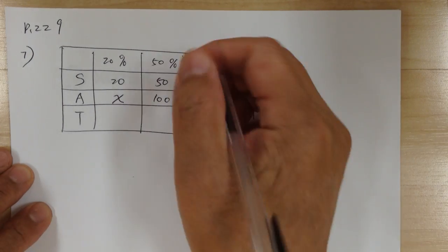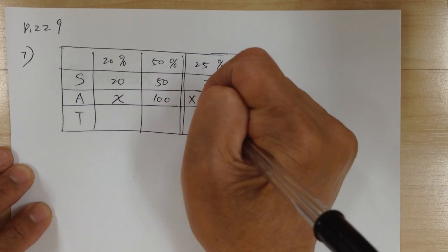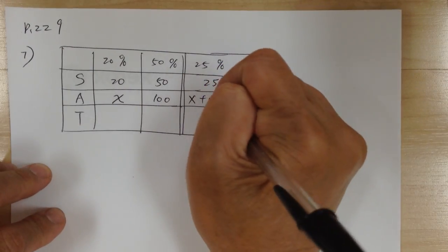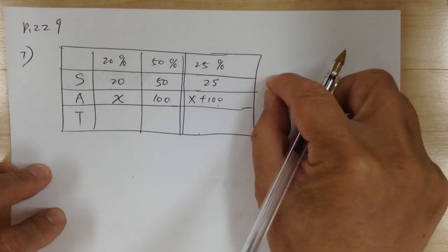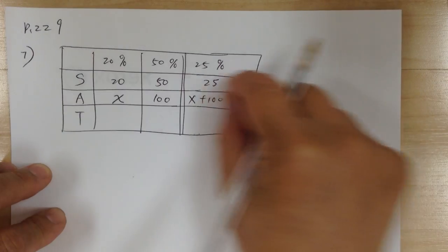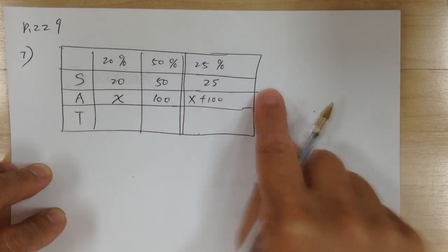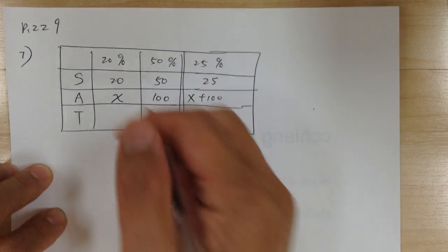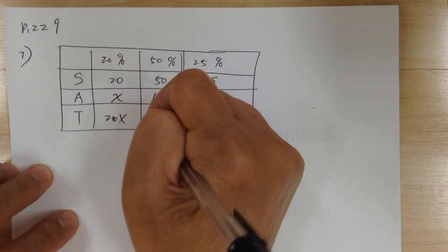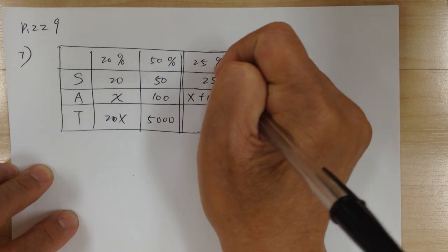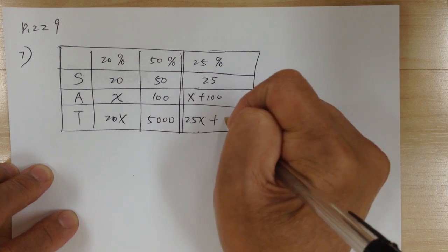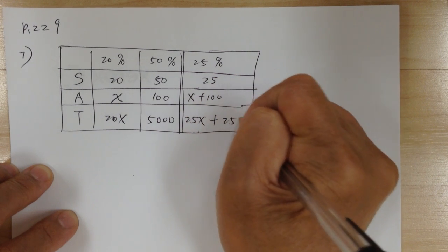When you mix, you have to add. Make sure you get these two rows done before you multiply down. Get everything filled up, then go and multiply it down. So you get 20X. This one you get 5000. Multiply, so you get 25X plus 2500.